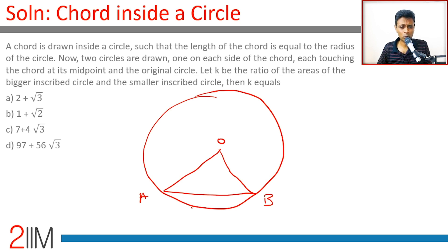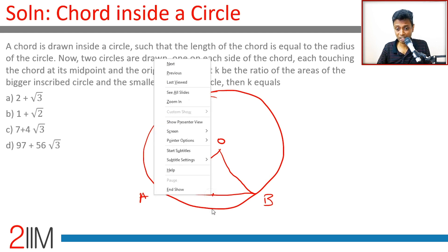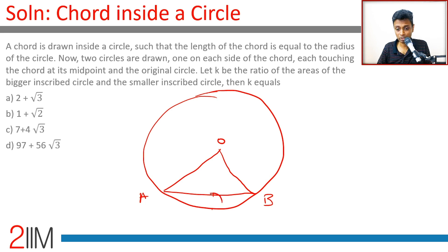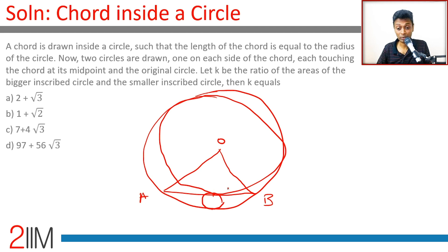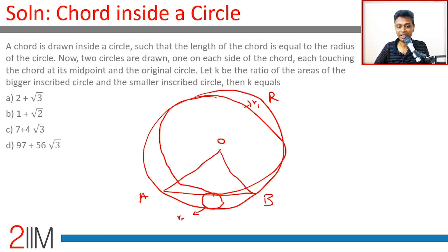Each inscribed circle touches the chord at its midpoint and the original circle — so we're effectively talking about a circle like this and a circle like this. We're not worried about the diagram, we're looking at the concept. We need to find the ratio of the areas of the bigger to smaller circle. This radius is r, this is r1, this is r2 — find the ratio of r1 to r2 and we're through.